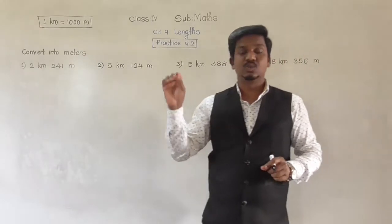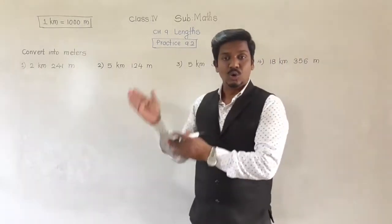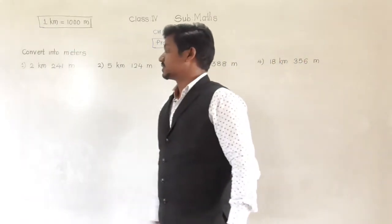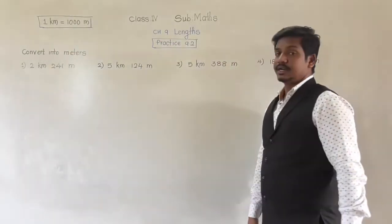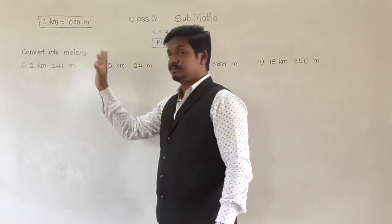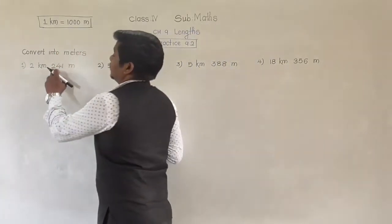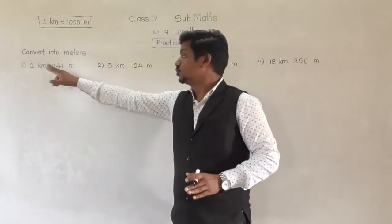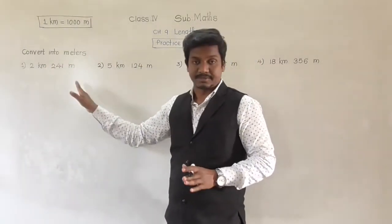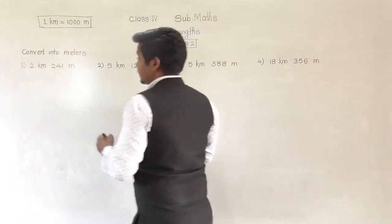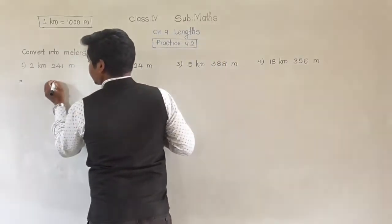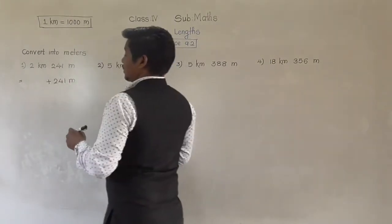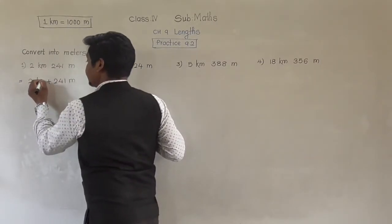Keep in mind: 1 kilometer means 1,000 meters, or 1,000 meters means 1 kilometer. Now see the first example: 2 kilometer 241 meter — convert into meter. In this, 241 is already in meters, so this need not be converted. Take it as it is. This 2 kilometer we need to convert.